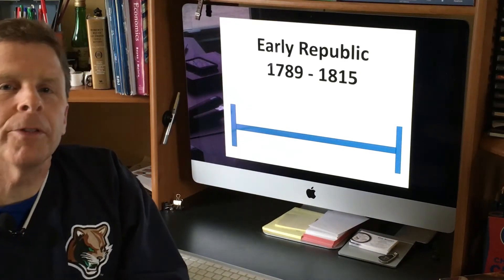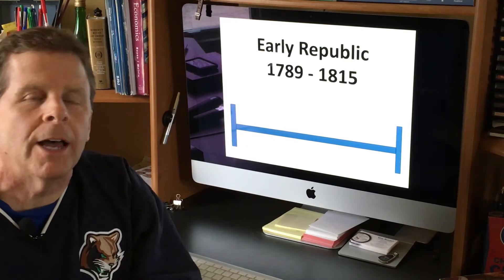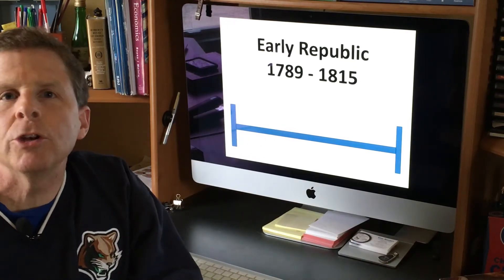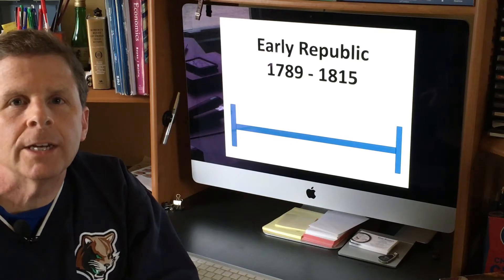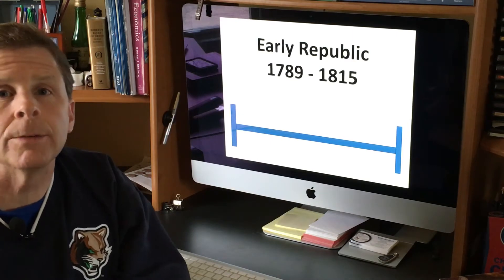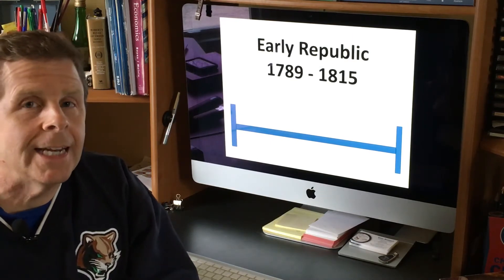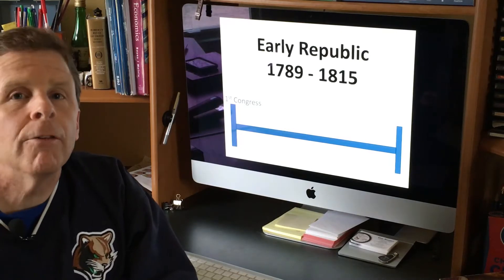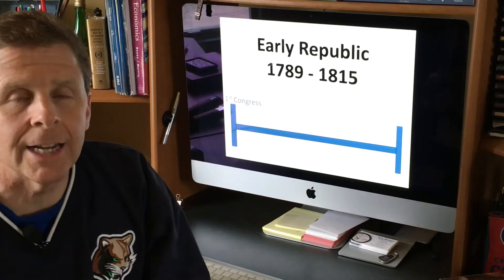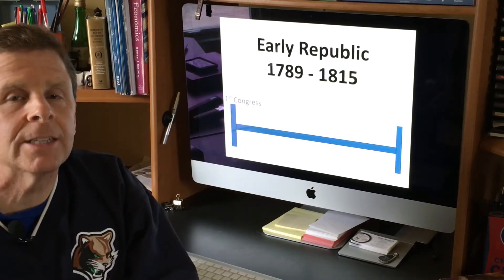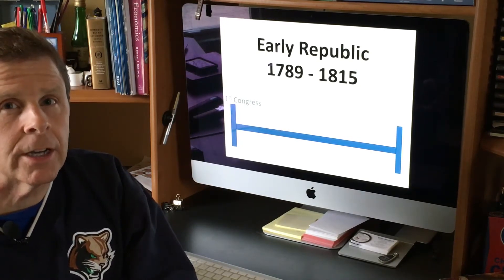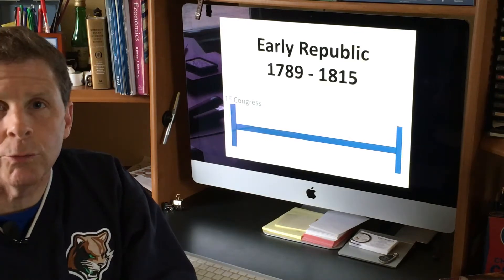All right, all you A-Push people, the next period in the Grand A-Push timeline is the Early Republic. This is basically the founding of the new government under the Constitution and everything involved with getting the country up and running under the Constitution. We're going to say 1789 is the start of this because that's the first Congress, and also the first president, but the Congress is the one that is passing the laws that are setting up all the things that are going to mark the new operation of the new government.